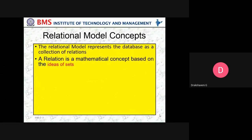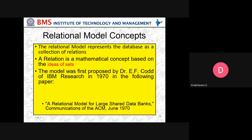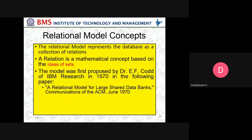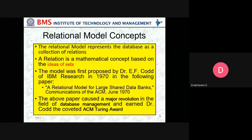So what is a relational model concept? The relational model represents a database as a collection of relations. A relation is a mathematical concept based on the ideas of sets. The model was first proposed by Dr. E.F. Codd of IBM Research in 1970 in the paper 'A Relational Model for Large Shared Data Banks,' published in Communications of the ACM in 1970. This paper caused a major revolution in the field of database management and earned Dr. Codd a prestigious award.